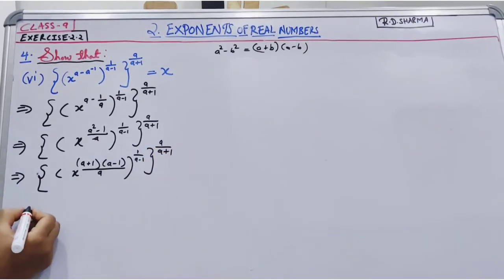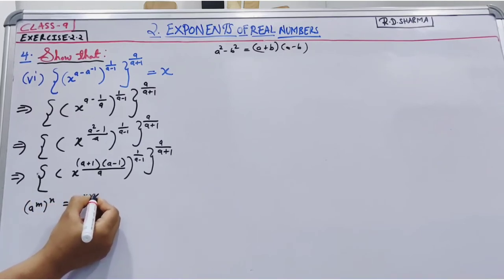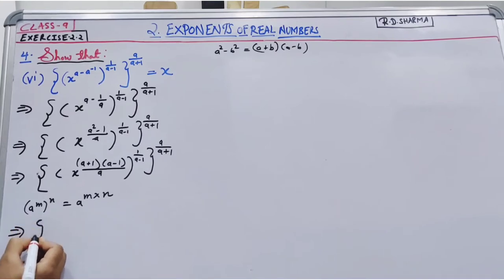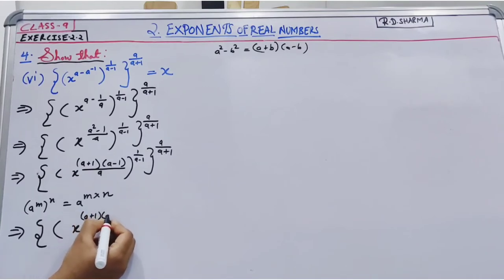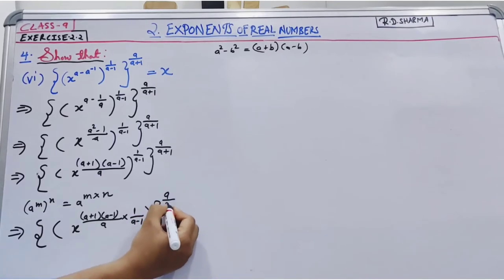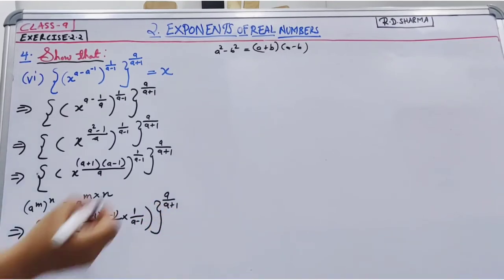Now according to our exponent law, a to the power n, both powers multiply. So our next step is x to the power a plus 1, a minus 1 divided by a multiplied by 1 divided by a minus 1, and to the power a, and to the power a, a plus 1.